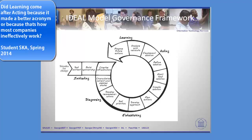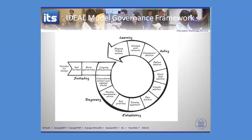Nothing is perfect and nothing fits perfectly forever. There will be changes in the environment, customers, constituents, or technology — lots of factors could change. You want to analyze and validate those changes, propose future actions, and then start the loop all over again. This ideal model for governance moves through initiating, diagnosing, establishing, acting, and learning, with sub-phases associated with each, providing governance for implementing the strategic plan.